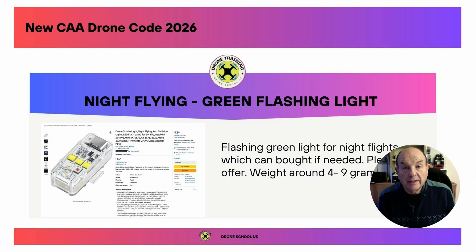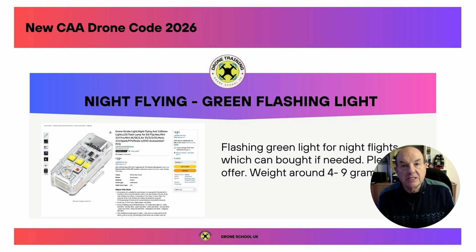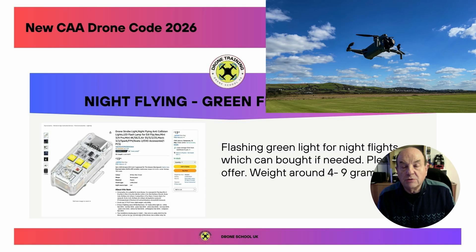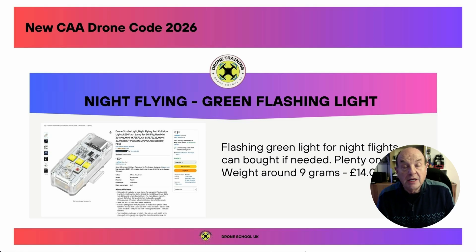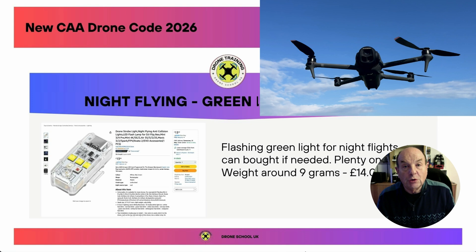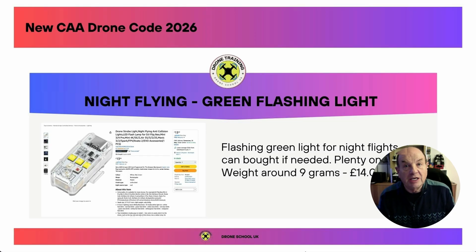The next key change relates to night flying. The October regulations said you needed a strobe light; these have been altered slightly — the CAA now says you need a flashing green light on the drone at all times so you can see it from the ground. DJI have lights already built into most of their drones; the DJI Mini 5 Pro for example has flashing green lights on the back. However, when you start recording video or take a still image, those green lights go out for the period of recording. On bigger drones like the DJI Mavic 4, you can switch those lights on or off independently, so they can still flash while you're videoing — though flashing lights during recording puts a tint on the video.